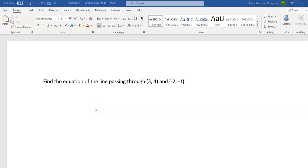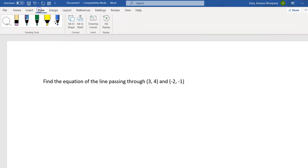So let's continue finding some equations of lines. Let's look at this next one. Find the equation of the line passing through (3, 4) and (-2, -1). Now we have those key words, find the equation of the line, and that should tell us that we want to use our point-slope equation.